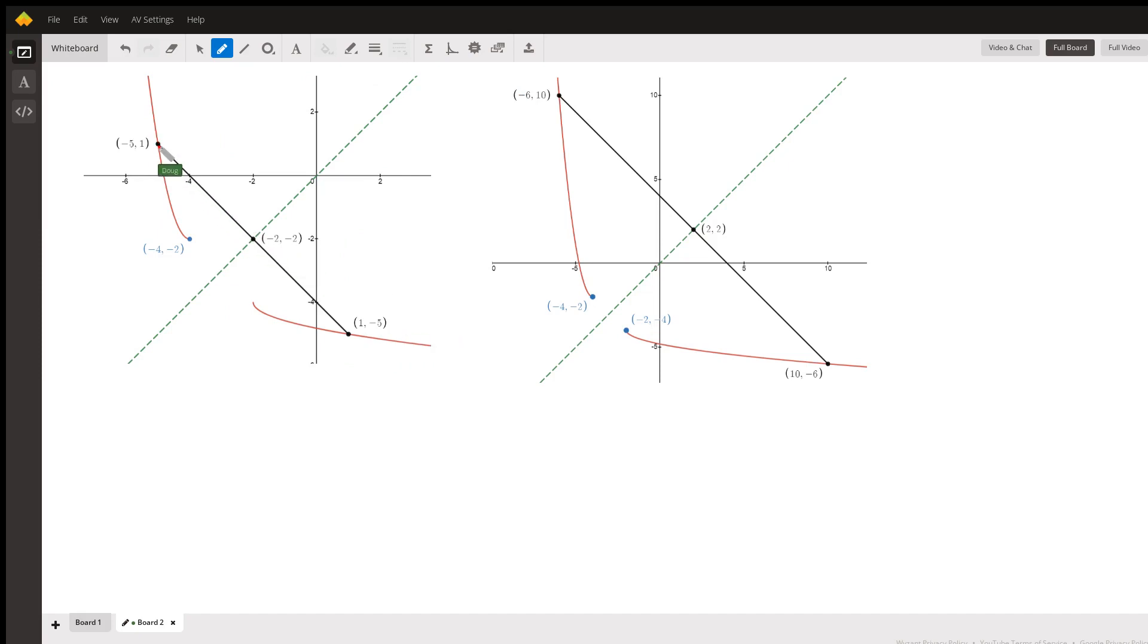And if I pick a point on the original function, like negative 5, 1, its corresponding point on the inverse function is 1, negative 5. And if you join those two points with a line segment,